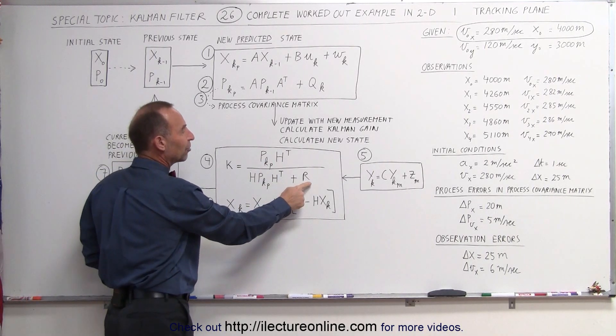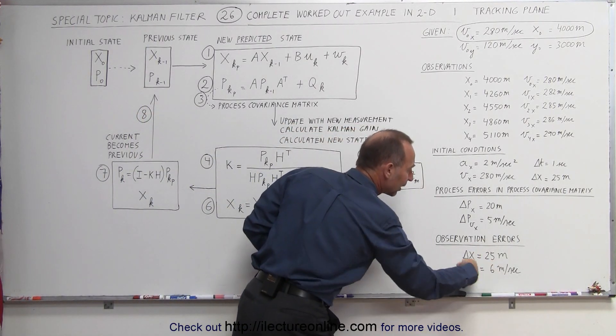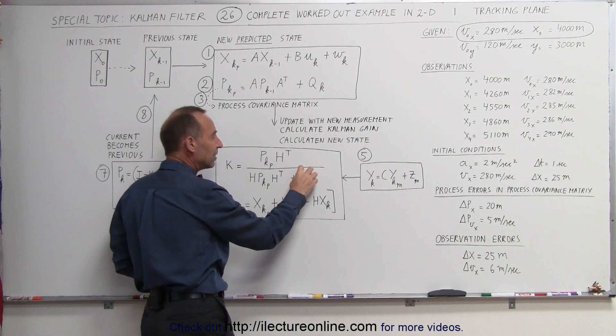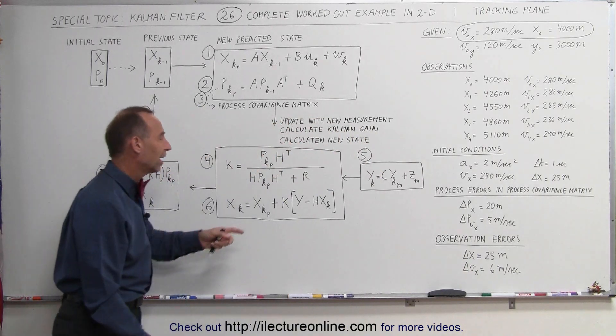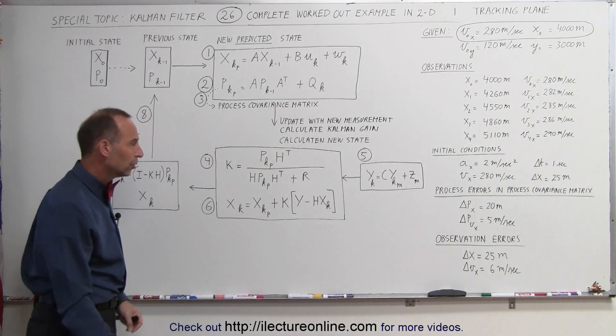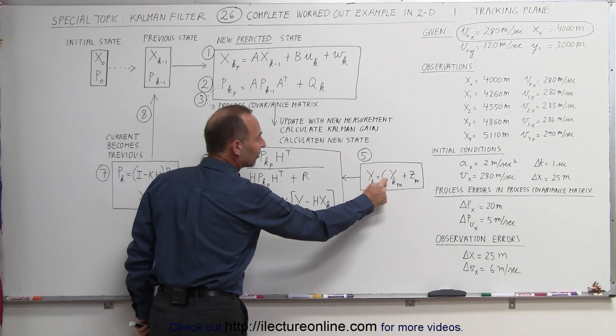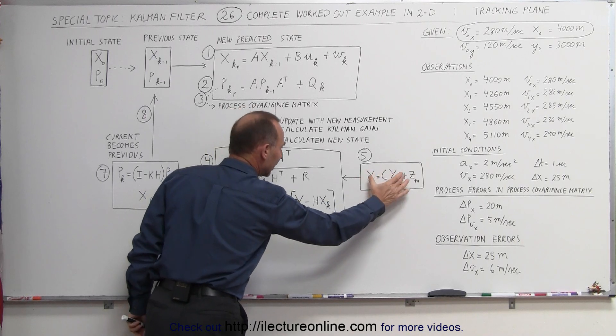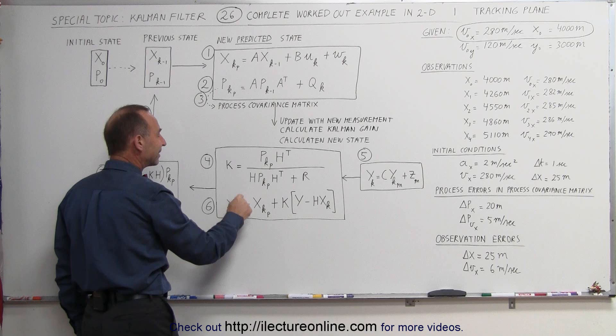R is the error in the observation, which will come from this values right here. So when we calculate the Kalman filter gain, we're going to need the variation or the uncertainties in the observations, and that's what goes in here. Notice that this is going to be the observation matrix, Y sub K. We're going to take C, which is another matrix to convert from here to here, and then we're going to insert that into the calculation of the new predicted state.